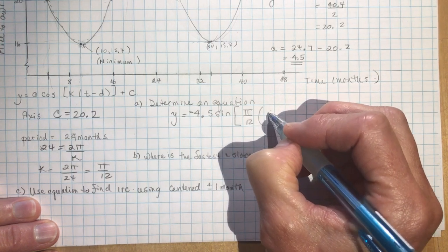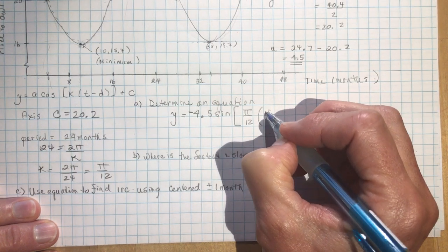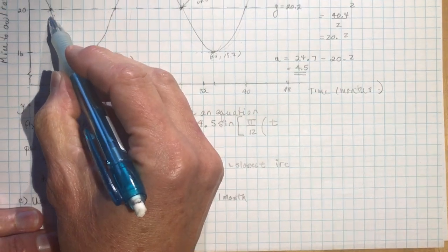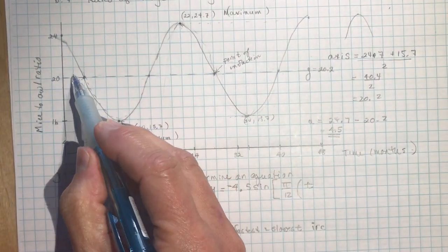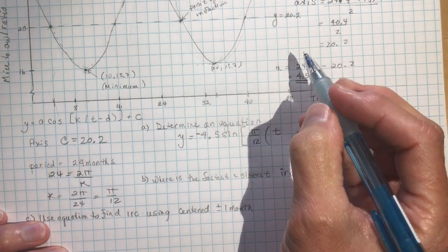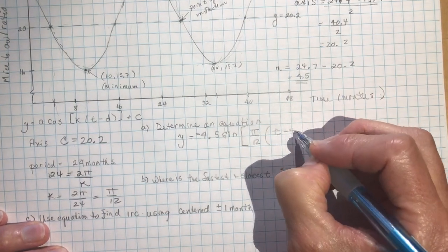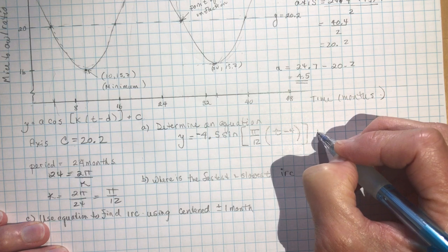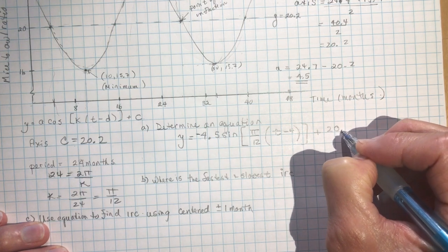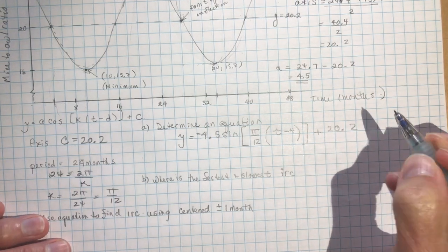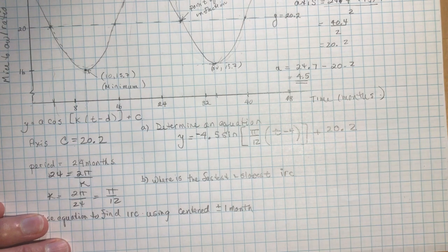So I'm going to write negative 4.5 sine, I put my k value, π over 12, bracket, and now I'm going to use t for time, I've shifted it 4 units, so 2, 4 to the right, so I'm going to subtract 4, and add the axis, 20.2. Okay, so there's my beautiful equation.